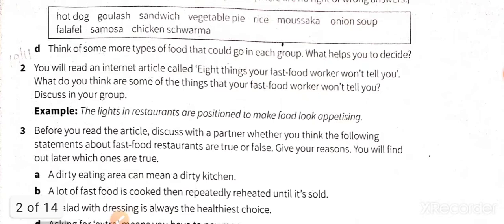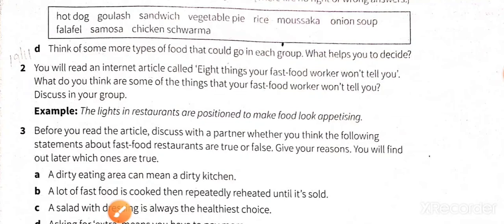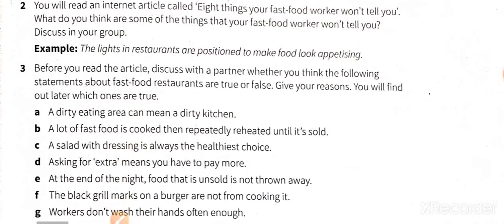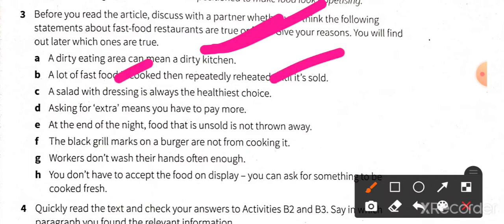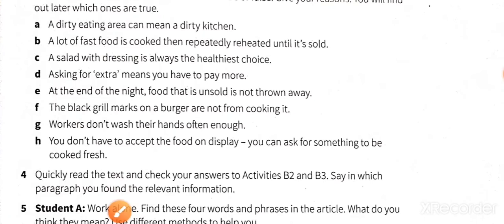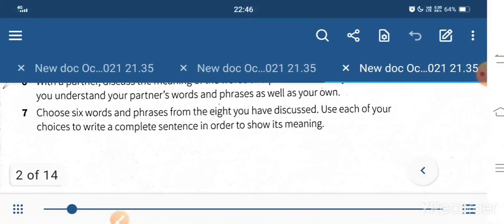Now we have to go through an article which covers eight things your fast food worker won't tell you. I'll share those eight points with you. On the basis of those eight points, you have to answer: Is it true or false that a dirty eating area can mean a dirty kitchen? Is it true that lots of fast food is cooked then reheated until it is sold? Answer these yourself first; in the next video I'll come up with the answers.